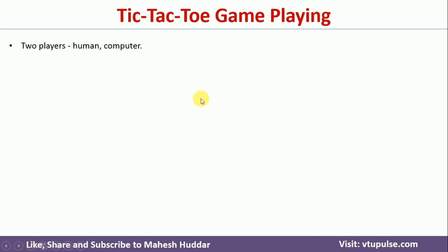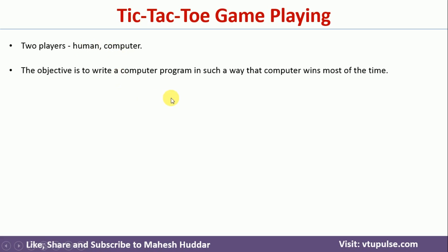As mentioned earlier, there will be two players. You can assume the first player is human and the second player is a computer. The objective is to write a computer program such that the computer wins most of these games — that should be the objective of each and every approach.